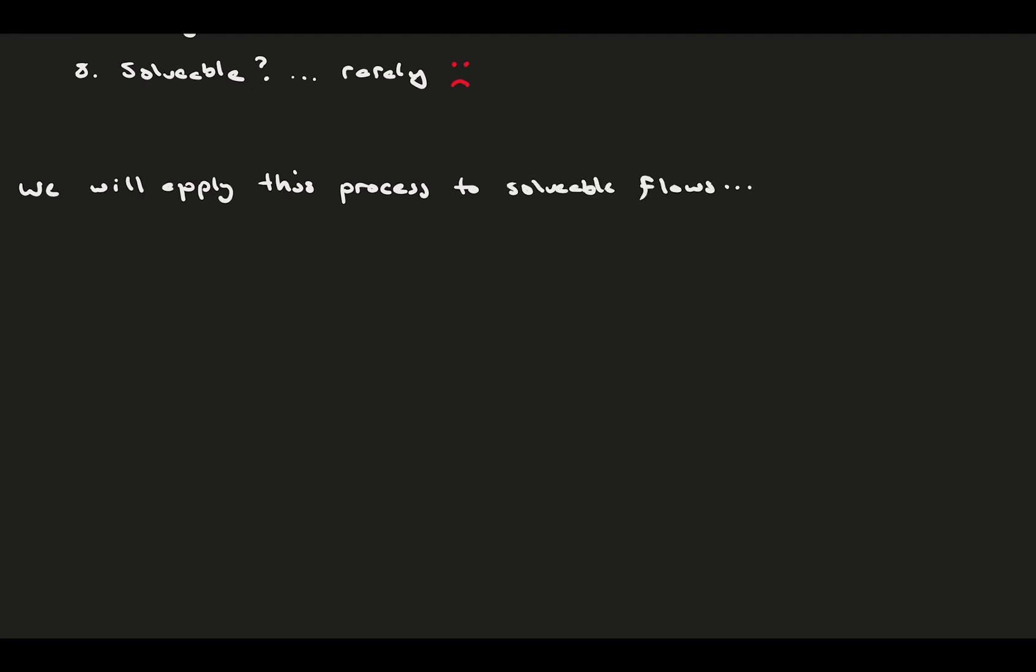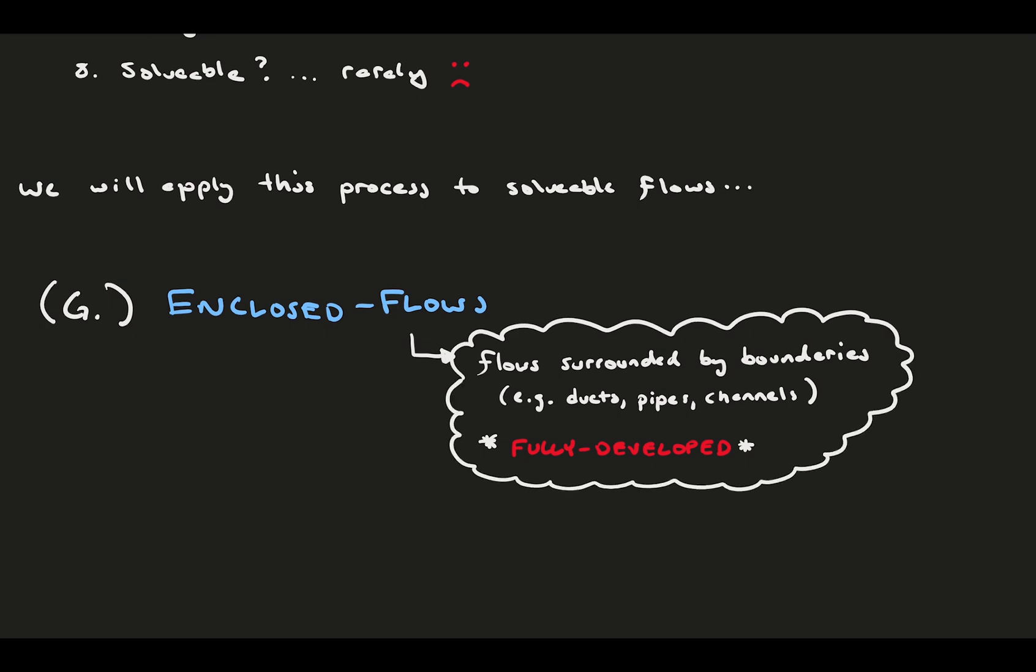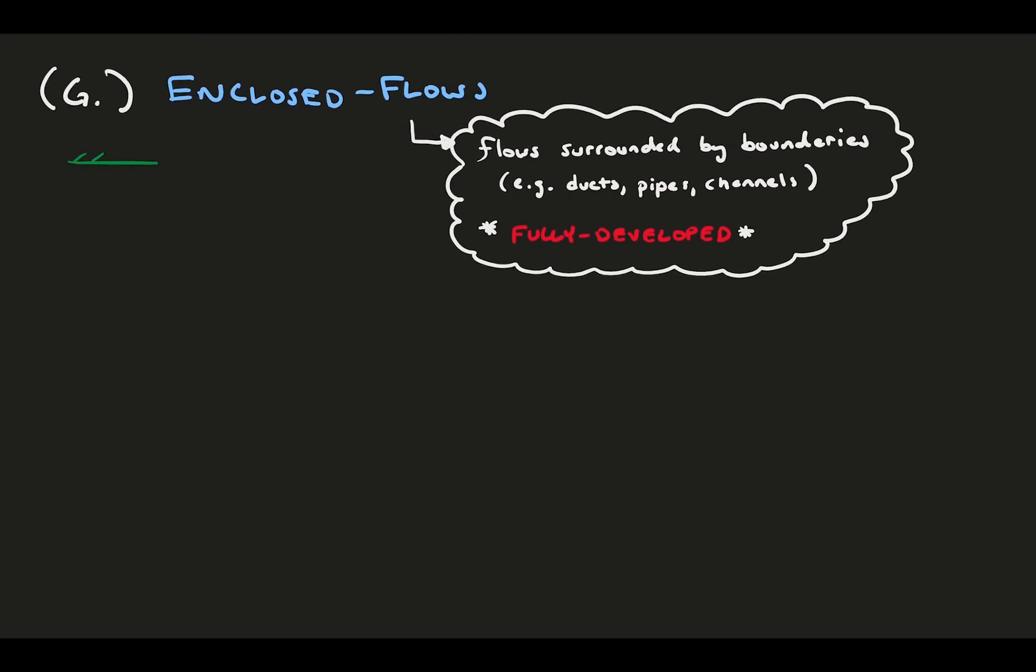Let's try and apply this general process to solvable flows, and the first of which we will encounter are enclosed flows. Basic enclosed flows are generally solvable and often the first step in learning fluid mechanics flow solving because of their simplicity. An enclosed flow is a flow surrounded by boundaries, including ducts, pipes, and channels. The biggest benefit to these types of flows is the enclosure stops them from being able to grow, and they eventually become fully developed.